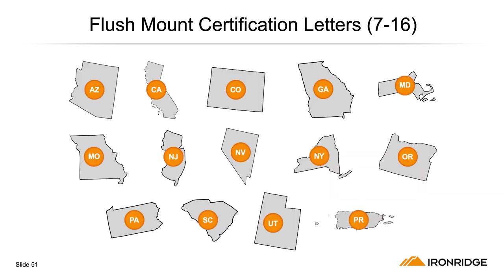IronRidge will be providing sealed letters as states move from 710 to 716. Currently, there are new letters for Arizona, California, Colorado, Georgia, Maryland, Missouri, New Jersey, Nevada, New York, Oregon, Pennsylvania, South Carolina, Utah, and Puerto Rico. If you're in a state where there aren't letters yet but your AHJ is ahead of the curve, contact support@ironridge.com and we can provide a site-specific letter.